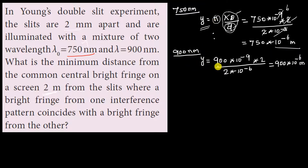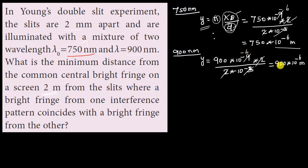For the second wavelength, lambda equals 900 nm, that is 900 into 10 to the power of minus 9. Using the same formula with D equals 2 meters and d equals 2 into 10 to the power of minus 3, we get 900 into 2 divided by 2 into 10 to the power of minus 3, giving a fringe width of 900 into 10 to the power of minus 6 meter, which is 900 micrometers.